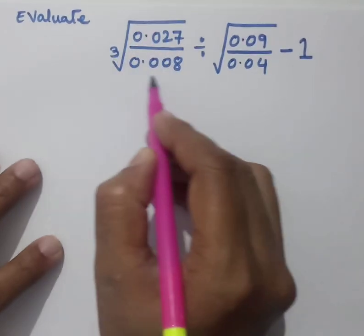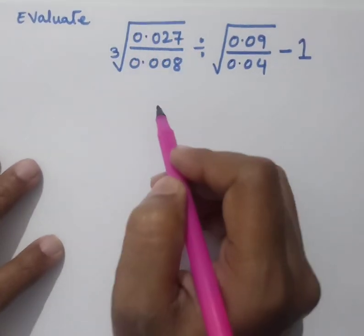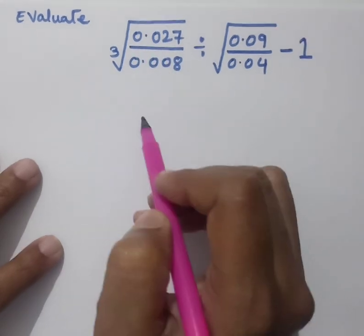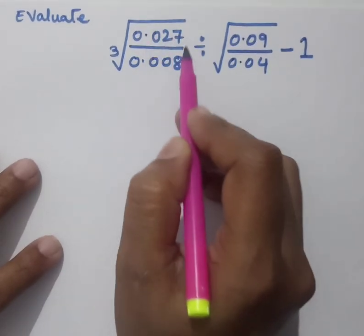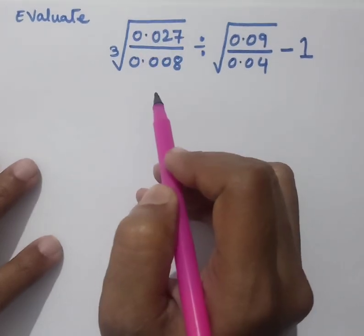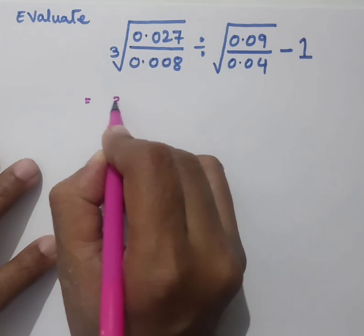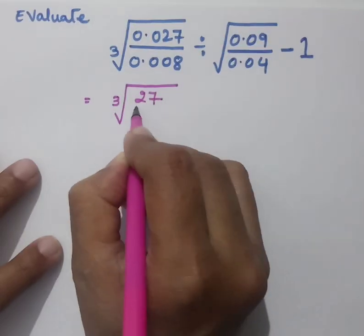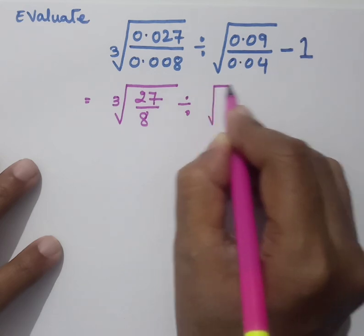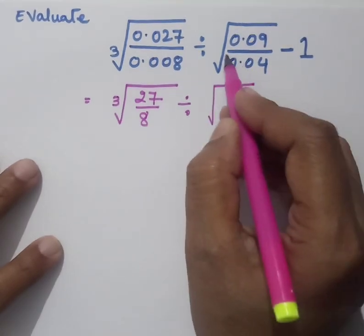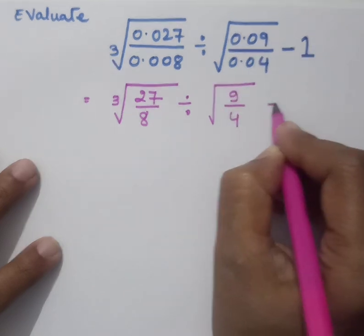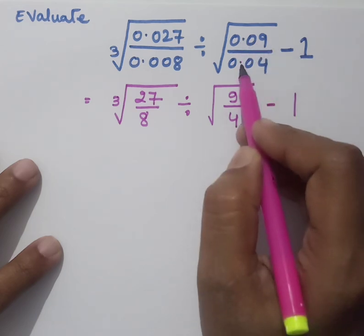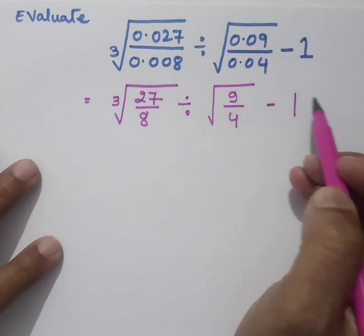First, let us look at this part — you have to find the cube root here. The fractions are in decimal form. See whether the decimals are like or unlike. Fortunately, the decimals are like, so we can simply remove the decimal point. We shall get 27 by 8, and the square root part becomes square root of 9 by 4 minus 1, because 0.09 and 0.04 are also like decimals, so we can remove the decimal point.